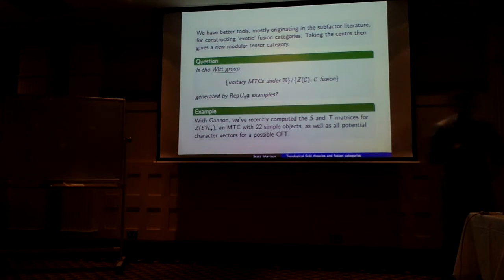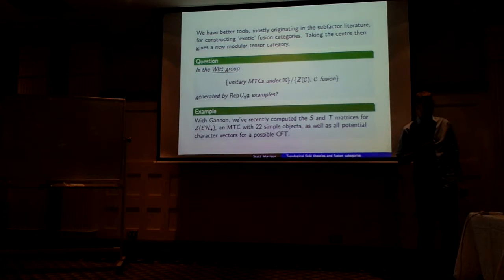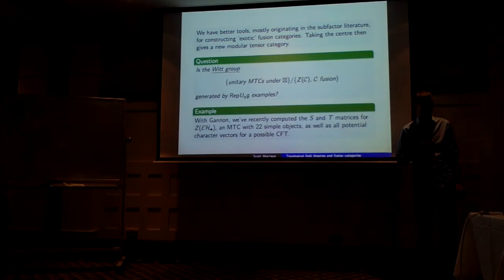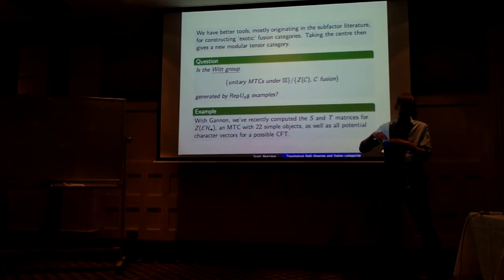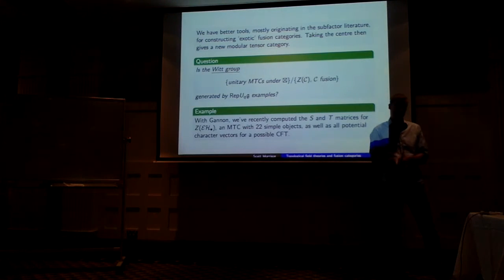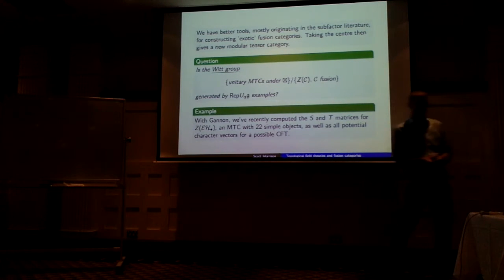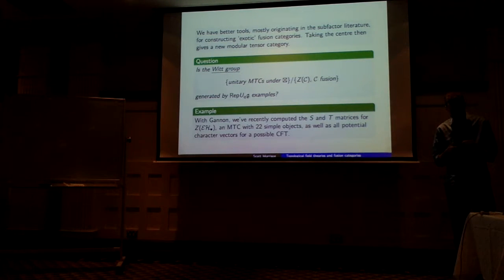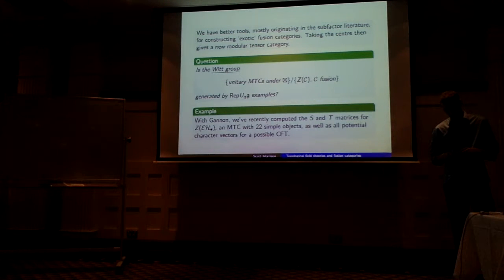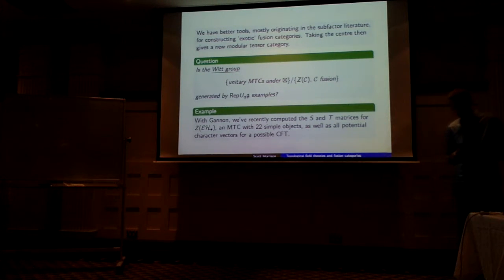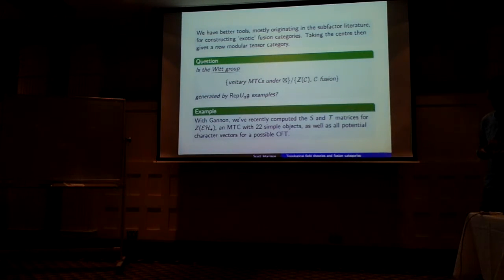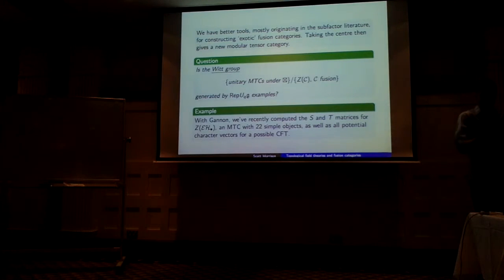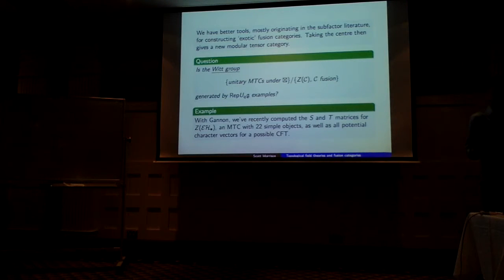Is there a Levin-Wen model for the extended Haagerup? Sure — if you think about it as just a fusion category, forget about the modular stuff, you can write down some lattice model for it. It wouldn't be a toric code though. What would distinguish it from the non-Abelian case? The only thing we have to separate the quadratic categories and extended Haagerup from much more familiar examples is the strange number theory — they require more exotic fields of definition. The conjecture is that it's easy to tell whether the center of a fusion category is universal for quantum computing, like whether the braid group representations are dense, and these examples would all be universal.